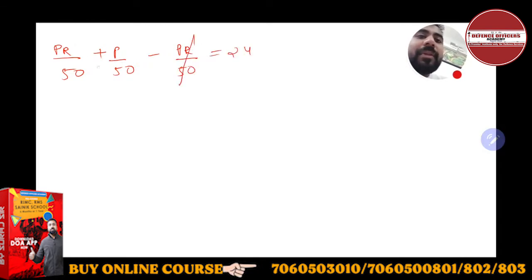So PR / 50 will get cancelled. Principal / 50 is equal to 24, and P is equal to 24 × 50, and P is nothing but 1200 rupees.